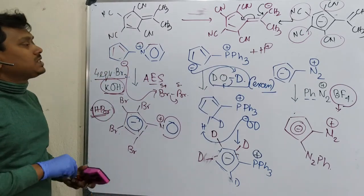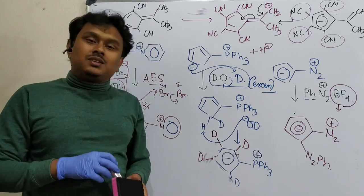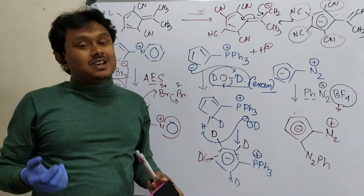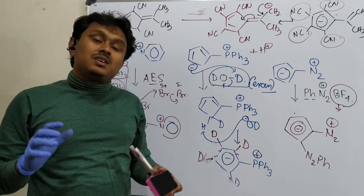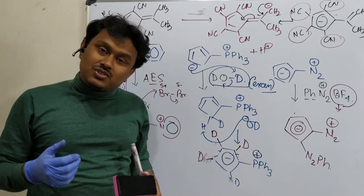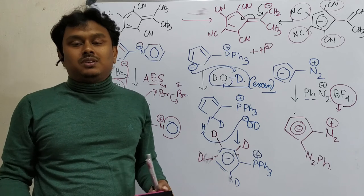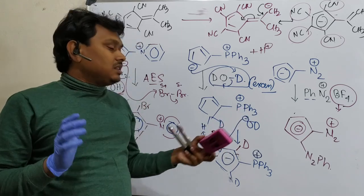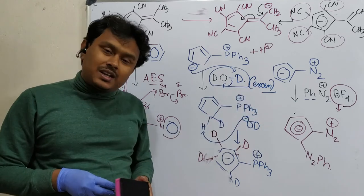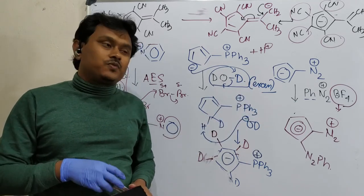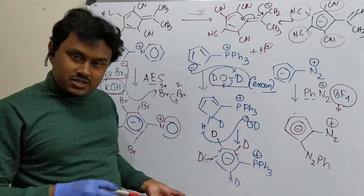So this is the overall discussion about the reactivity, dipole moment, and acidity regarding the cyclopentadienyl anion. Because it is resonance-stabilized, it is unique compared to traditional C-H bonds in terms of acidity. There are other examples of cyclopentadienyl derivatives — metal complexes like ferrocene, cobaltocene — which we will discuss in other videos.